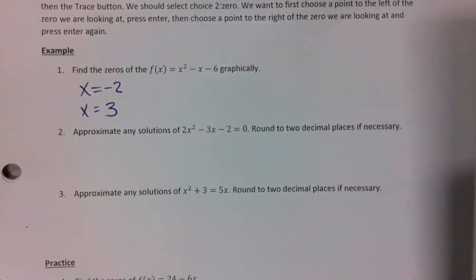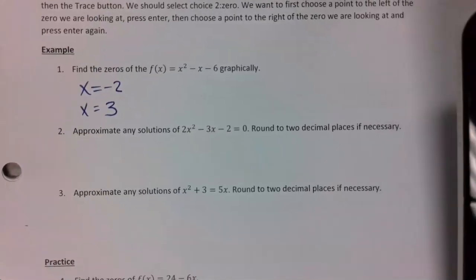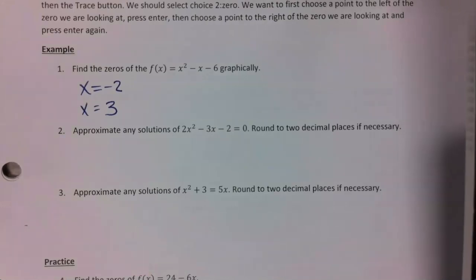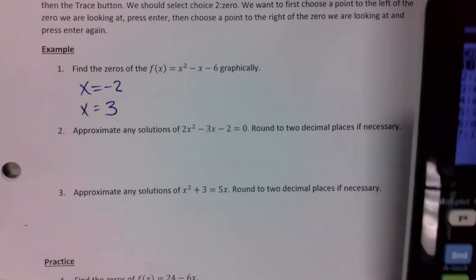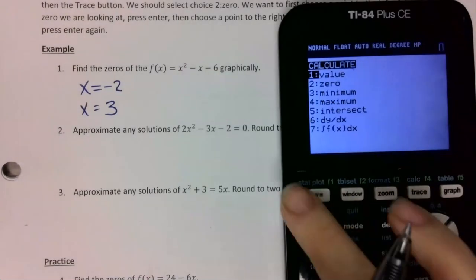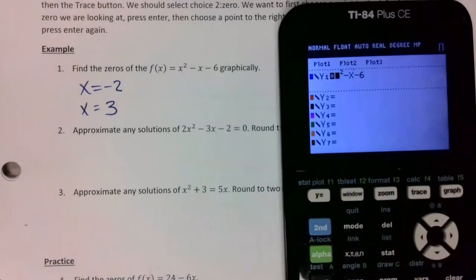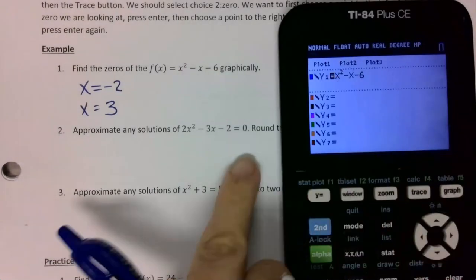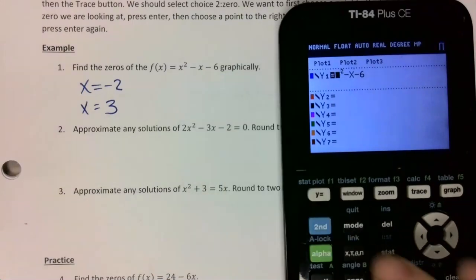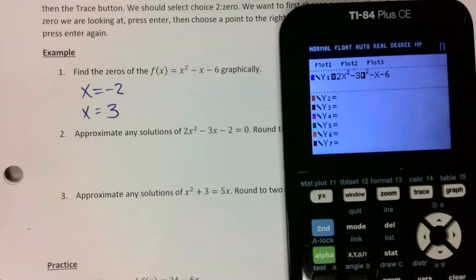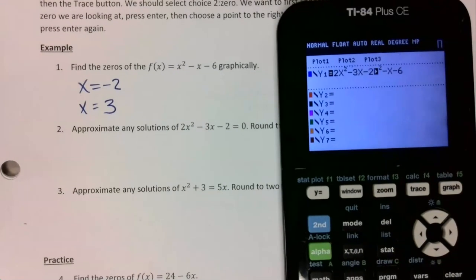Same thing for number two. A student asks for clarification on how to use the calculator, so I'll demonstrate on number two. Number two already equals zero, so I just want to type in the part that doesn't equal zero: 2x squared minus 3x minus 2.